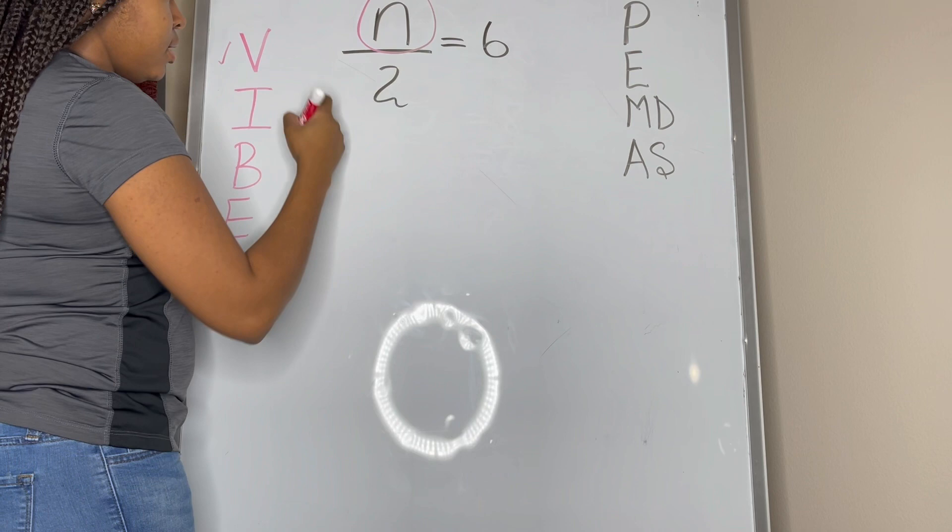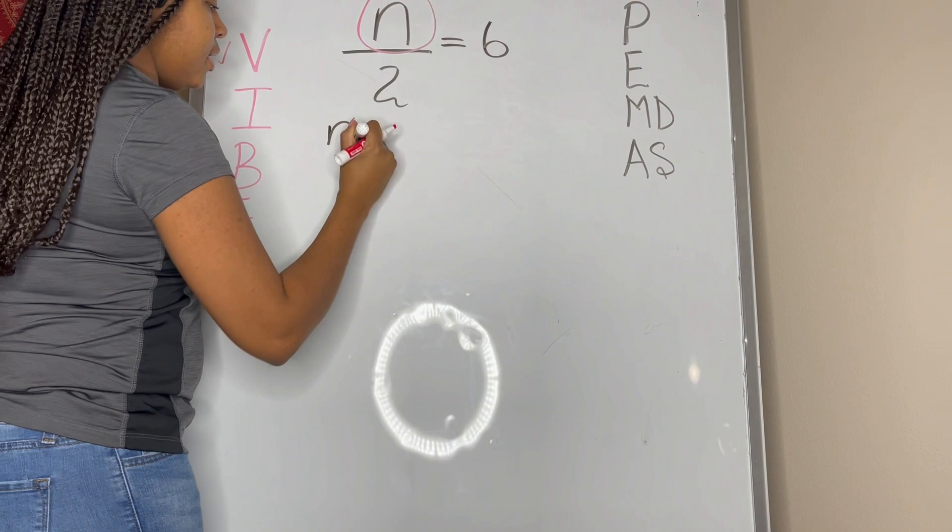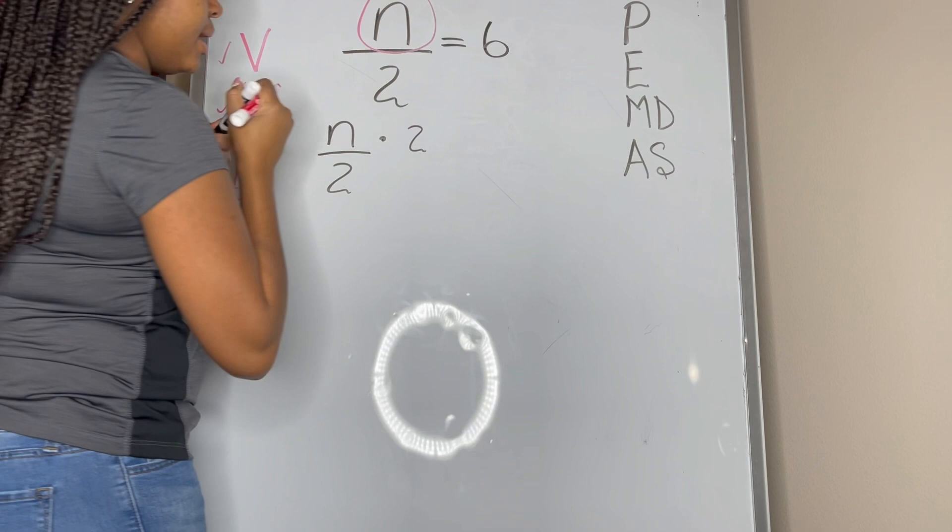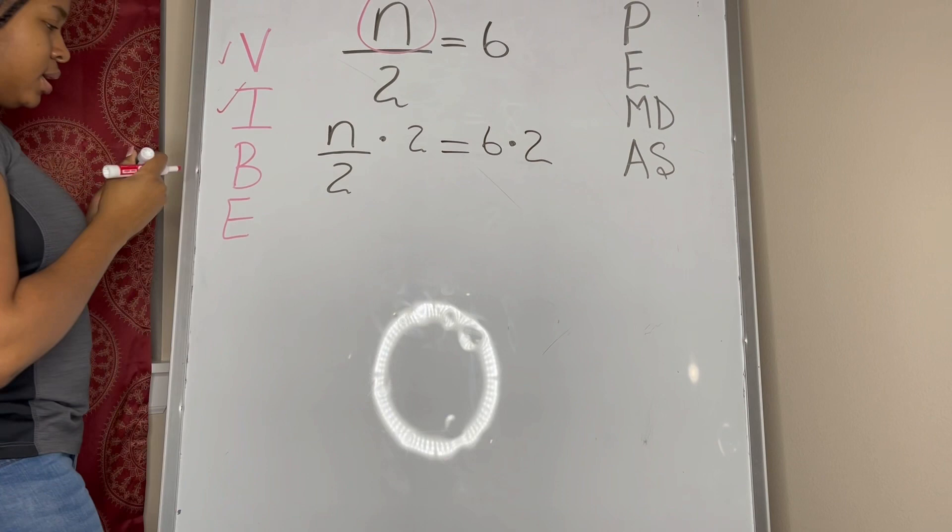Since n is divided by 2, we need to multiply all of that by 2. Now since we've done that to the left side, we need to also do that to the right side. So we're going to have 6 multiplied by 2.